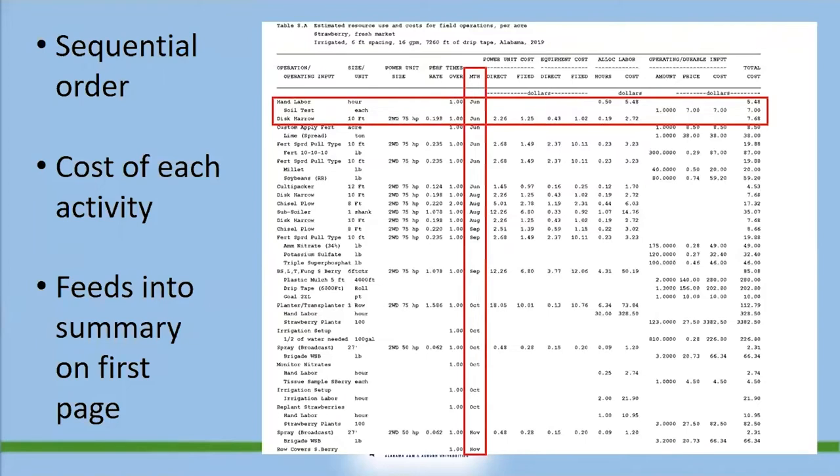The second activity is disking the field. The estimate is based on a 10-foot disc and a 75-horsepower tractor. Machinery cost comes from calculations and tables, so don't expect to be able to calculate exactly what's listed here.